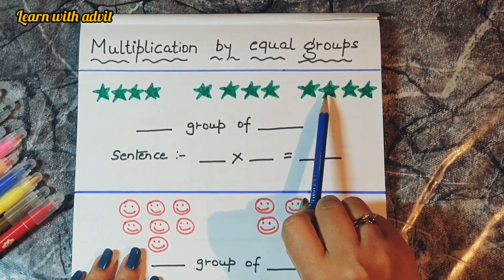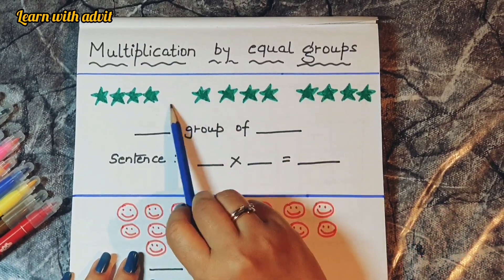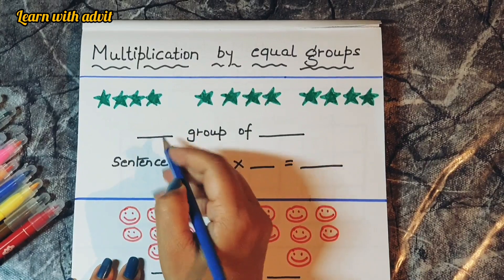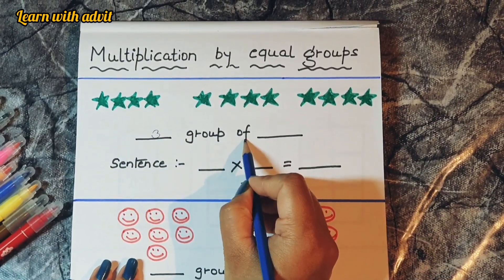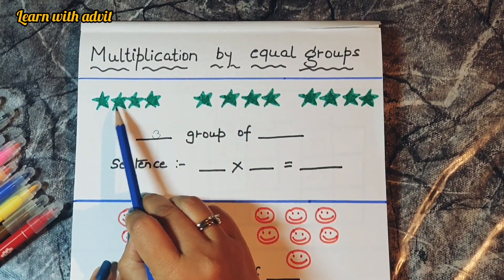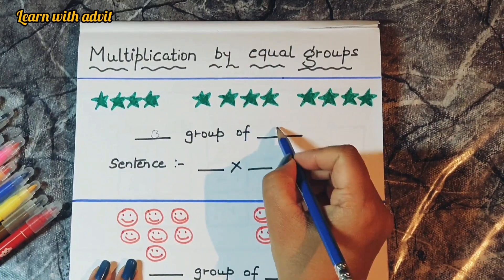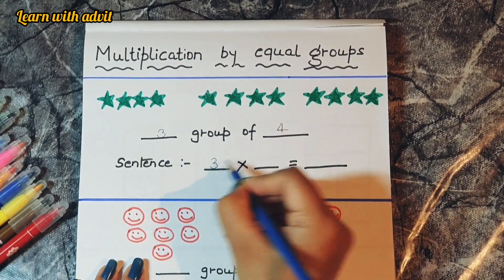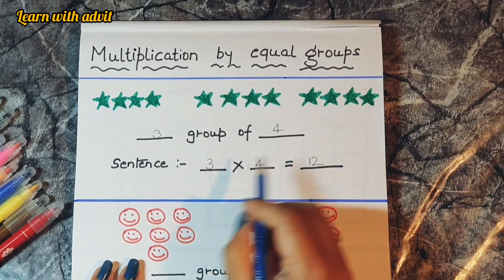In the third group we also have one, two, three, four stars. So what they need to do is write: three groups of four stars. For the multiplication sentence they need to write three into four equals twelve.